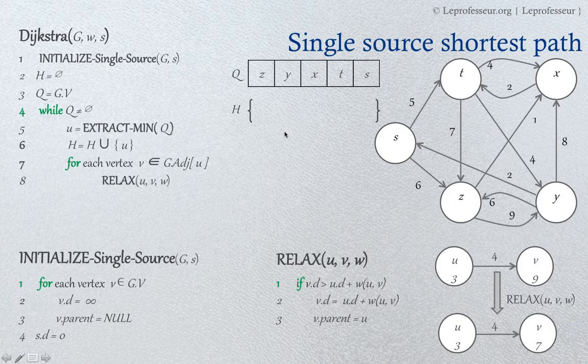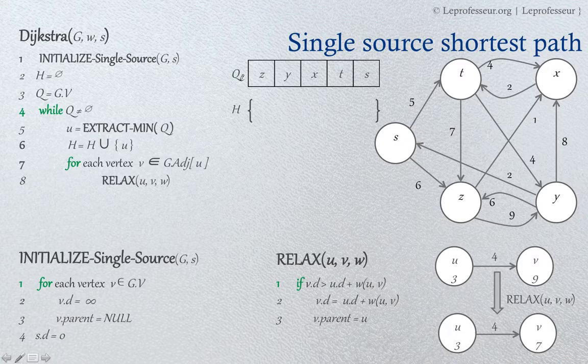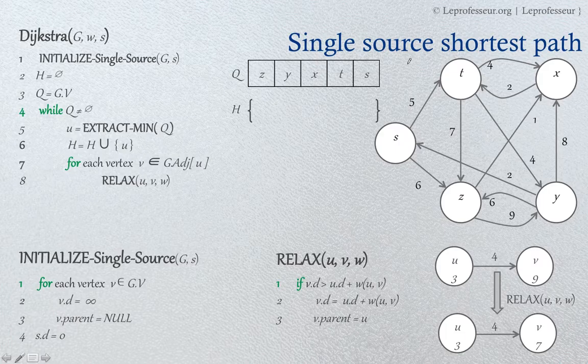So let's say we have been given this graph with the weights on each edge, and the weights are positive. As we said earlier, this algorithm requires maintaining a queue Q, which can be implemented as a simple binary heap or a Fibonacci heap. This is our queue Q. In the queue we have all the vertices in the graph, and it's the set H.